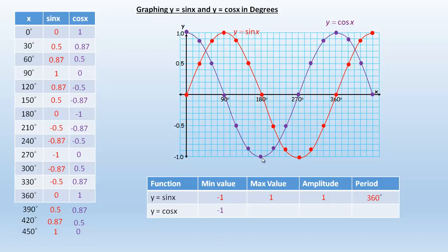For the cosine, the minimum is also negative 1 and the maximum is positive 1, just at different places. The amplitude is still the same — the distance between the middle axis line and a maximum or minimum is still 1. And the length of a cycle is still 360 degrees. So that's one full cycle, and then this would be the start of another cycle replicating what we did right here. Those are some of the characteristics of sine and cosine graphs.